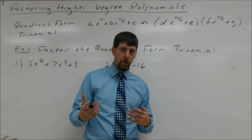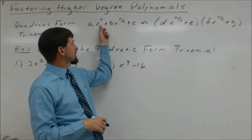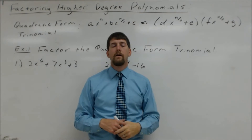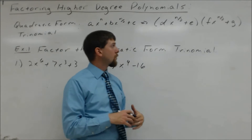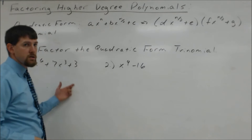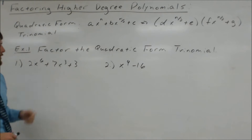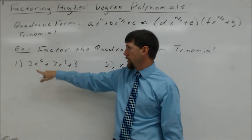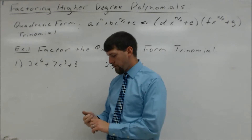This doesn't always work for every x to the tenth, but if it's an x to the tenth where we have x to the tenth, x to the fifth, and then a constant, then we can try it just like we do quadratics. So when it meets that format — or it looks like a quadratic trinomial — we can factor it the same way. Let's look at these examples. We've got 2x to the sixth plus 7x cubed plus 3. We have a degree, half the degree, and a constant. So that's a quadratic form trinomial.